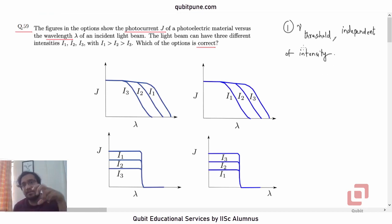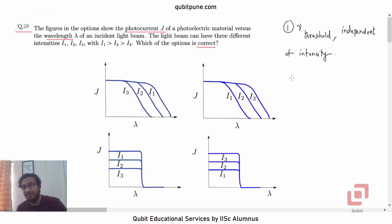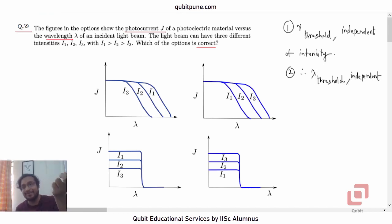Independent of intensity, if the frequency is greater than the threshold, you will see the photoelectric effect instantly — according to quantum theory, and that is what observations tell us. So if we have a threshold frequency independent of intensity, we must also therefore have a threshold wavelength, again independent of intensity. The only difference is that lambda threshold should be the maximum, because lambda and nu when multiplied produce the speed of light.